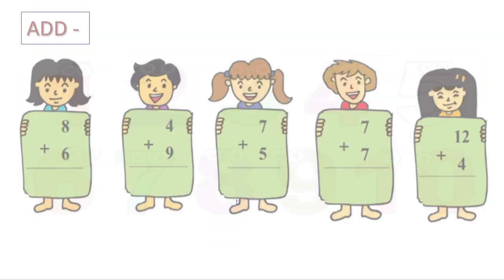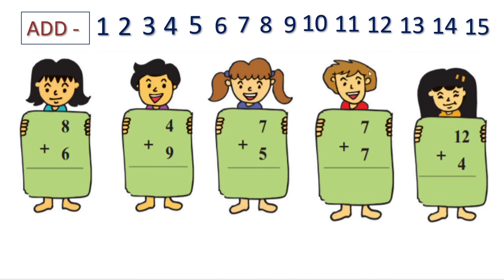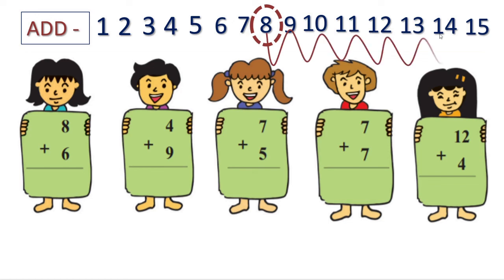Now this is from your textbook. One I will show you: eight plus six. Let us write fifteen numbers. Encircle eight, then move six steps forward: one, two, three, four, five, six. We got fourteen — that is our answer. In the second sum, four plus nine — you can take nine in your mind and use four fingers to count forward.